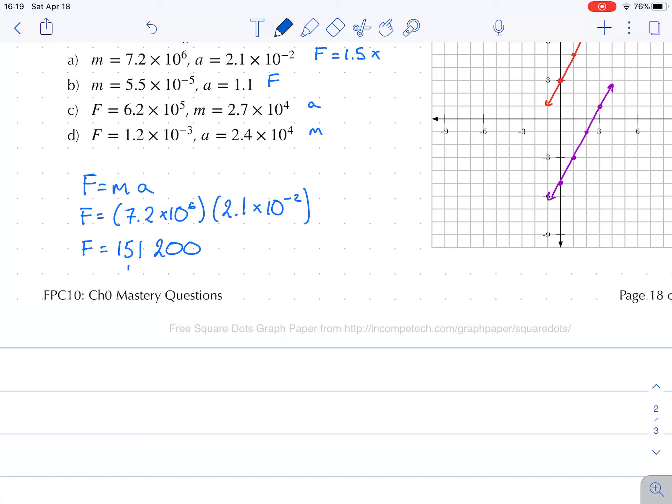So my force is equal to 151,200. Now I'm going to write this in scientific notation, like all my questions. So it's 1.5 - I round it to the second place. And 1, 2, 3, 4, 5 - 1.5 times 10 to the power of 5 is my answer. 1.5 times 10 to the power of 5.